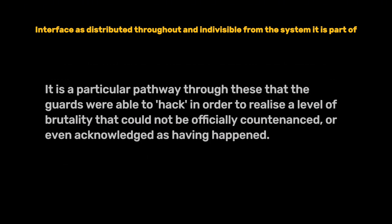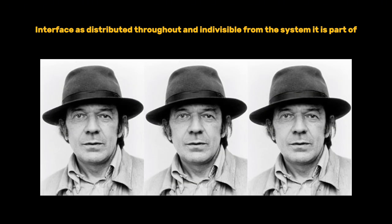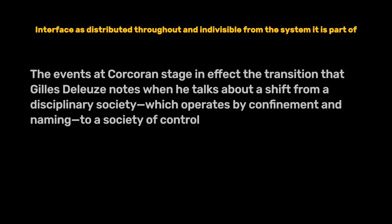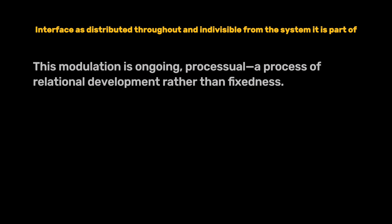It is a particular pathway through these that the guards were able to hack in order to realize a level of brutality that could not be officially countenanced or even acknowledged as having happened. Based on that, Fuller discusses how this distributed interface reflects a shift from a disciplinary society, as described by philosopher Gilles Deleuze, to a society of control. The events at Corcoran stage in effect the transition Deleuze notes when he talks about a shift from a disciplinary society — which operates by confinement and naming — to a society of control, in which behavior is modulated. This modulation is ongoing, processual, a process of relational development rather than fixedness.